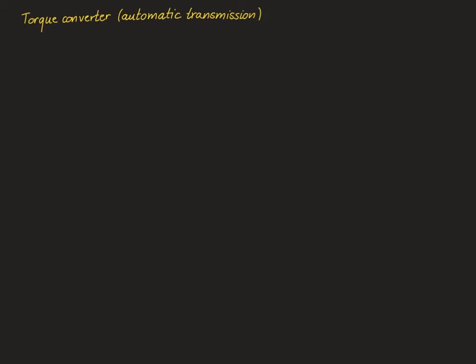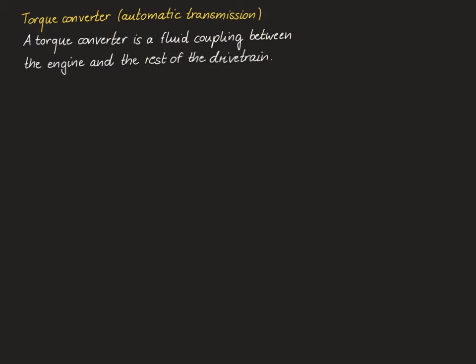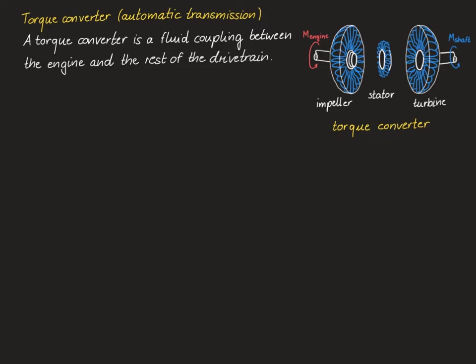Cars with an automatic transmission have a torque converter instead of a clutch. More specifically, a torque converter is a fluid coupling between the engine and the rest of the drivetrain. The main elements of the torque converter are the impeller, the stator, and the turbine. The impeller is connected to the engine torque and the turbine is connected to the drivetrain shaft.